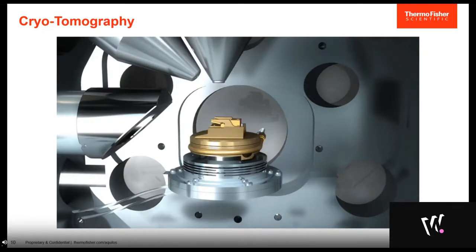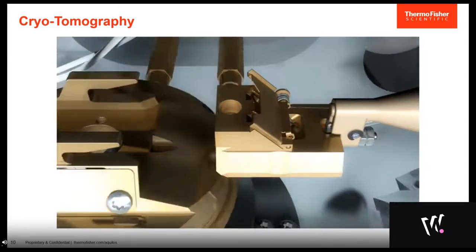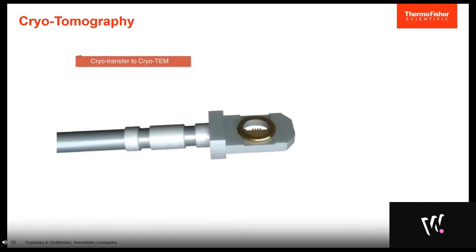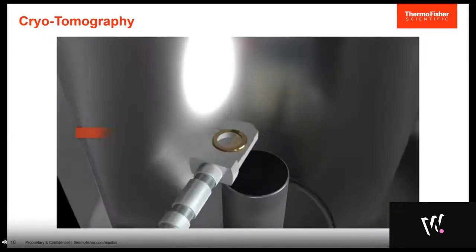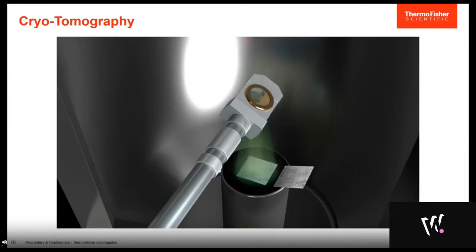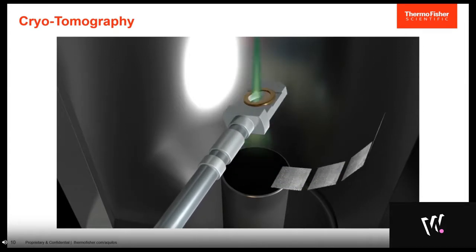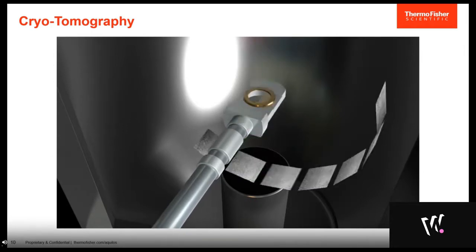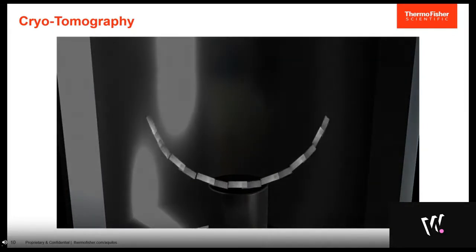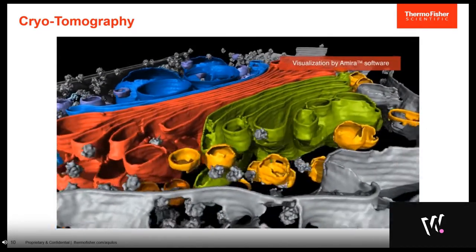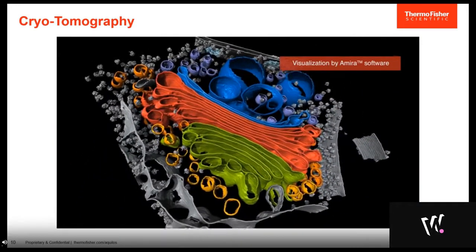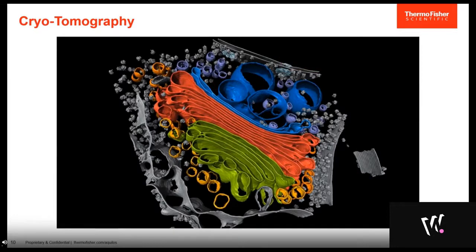Once a lamella has been created, the next step is to take it out of the focused ion beam system and transfer it into a cryo-TEM — here the Krios G4, a 300 kV transmission electron microscope. The tomography tilt series is acquired by rotating the sample under the electron beam, producing a projection series. From that projection series we reconstruct a tomogram, which reveals a snapshot of the frozen hydrated cellular interior — in this case showing Golgi with surrounding ribosomes and the nuclear pore complex, giving detailed information about the cell interior at very high resolution.